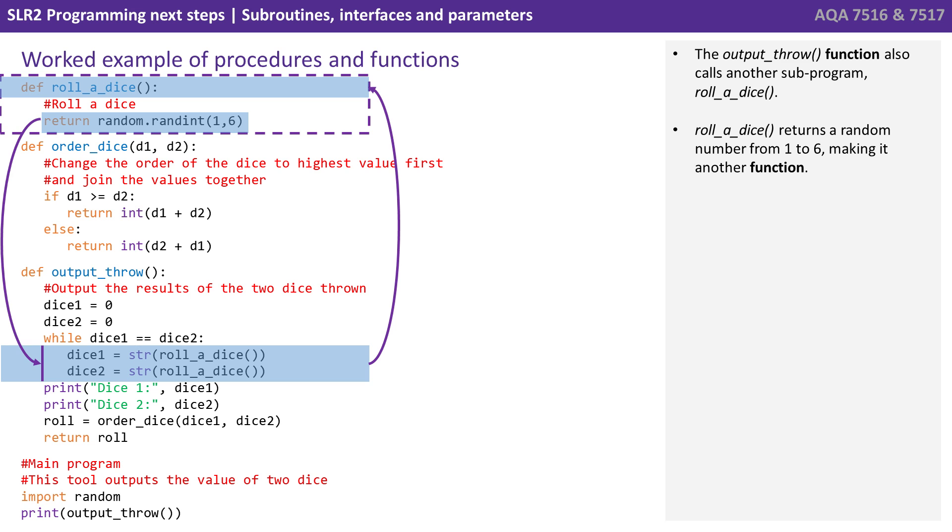The output throw function also calls another subprogram, roll a dice. Roll a dice returns a random number from one to six, making it another function.